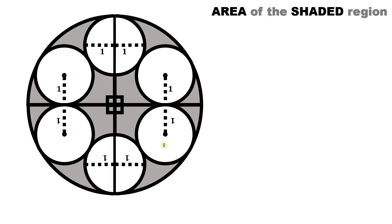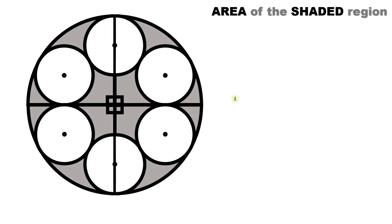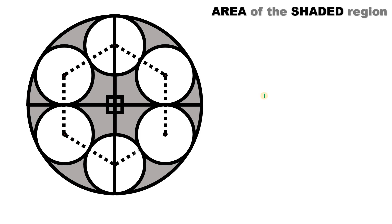We know all of these circles have a radius of one unit. At this point, let's set aside those radii and connect all of the centers of these small circles, each having a radius of one unit. Technically, we have here a regular hexagon.